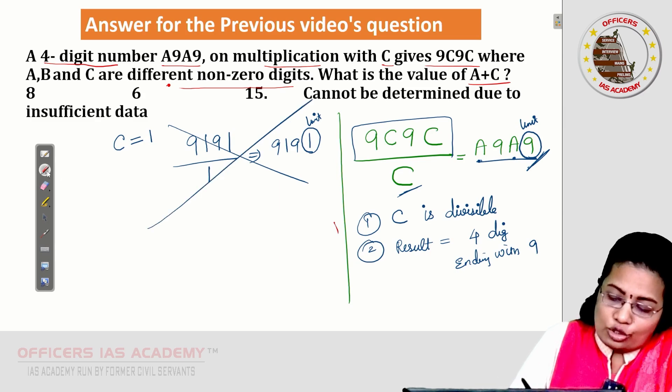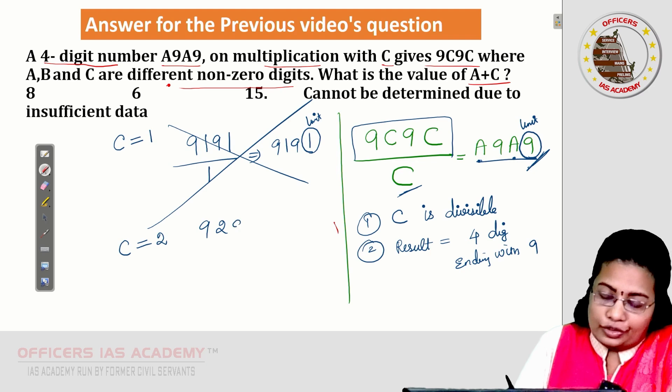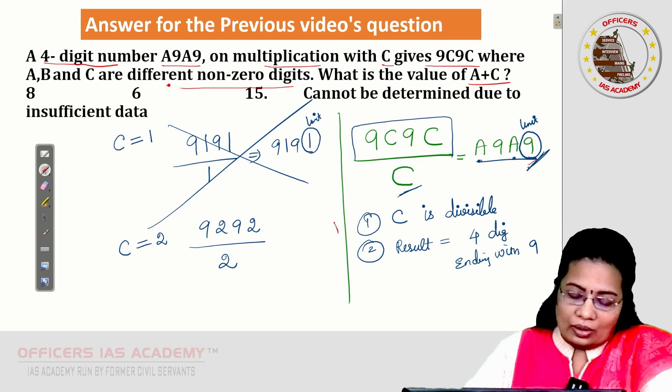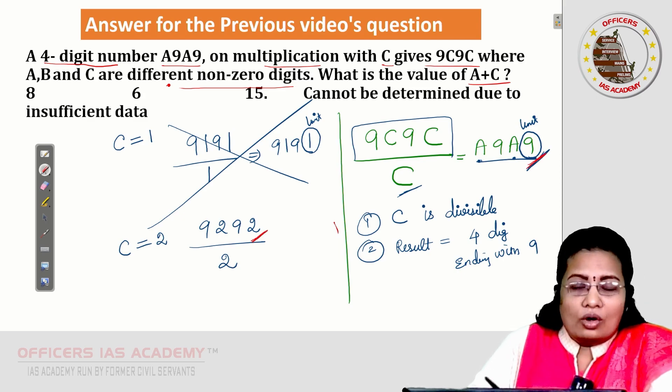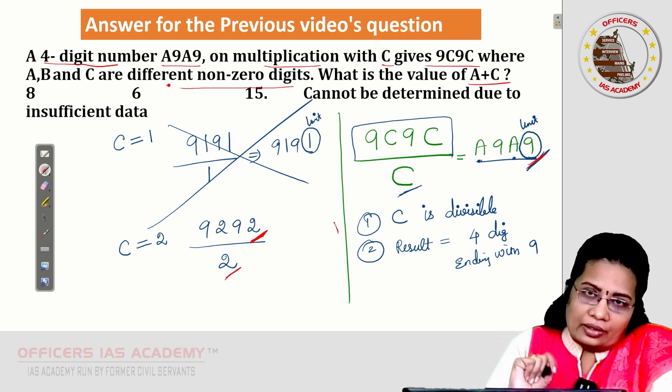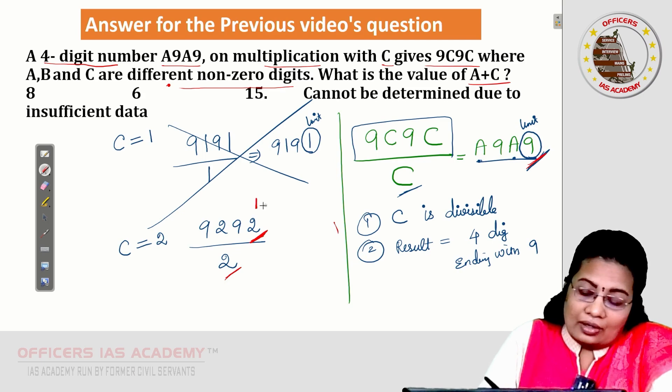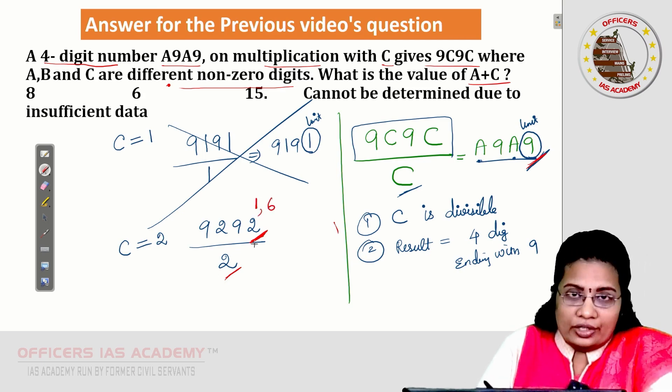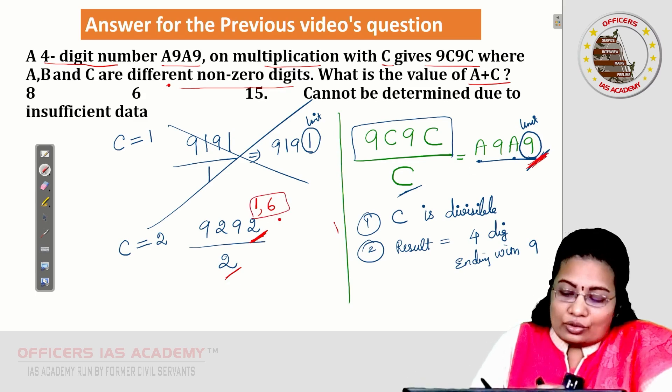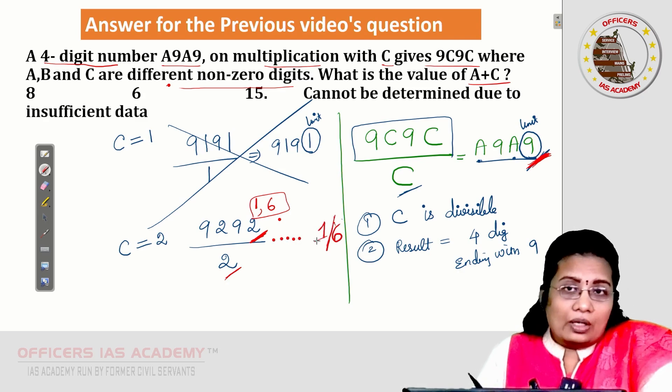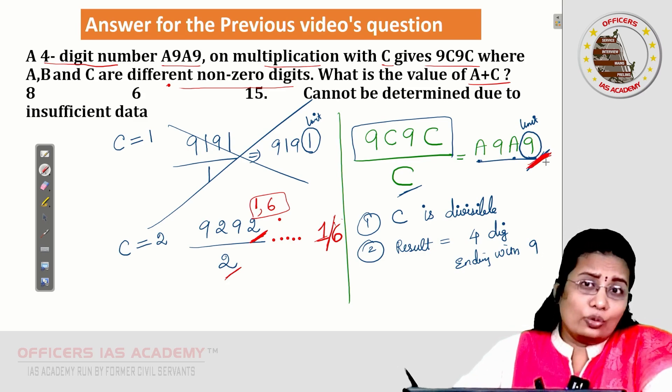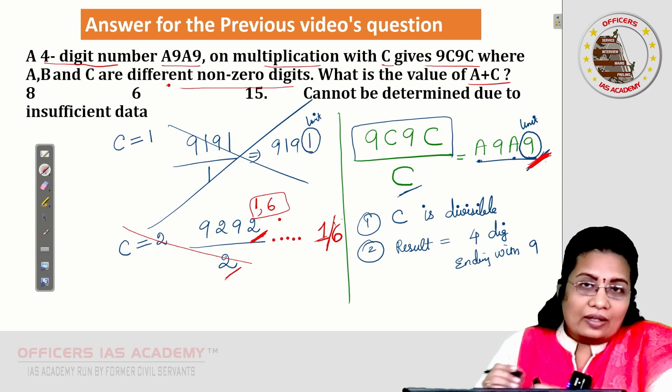Let me take C is 2. 9292 divided by 2. We can do direct division. Otherwise, our focus is on unit digit. Just now I told you. What is the idea? Here 2, here 2. In 2 table, 2 multiplication tables. What value gives you 2 as a result? 2 and 2. Otherwise, 2 into 6, 12. That is also giving you unit digit is 2. 1 or 6 is available in this case. But we require 9. If you solve it, you will be getting either 1 or 6. But we want 9 at the unit place. So, here second case also not valid.